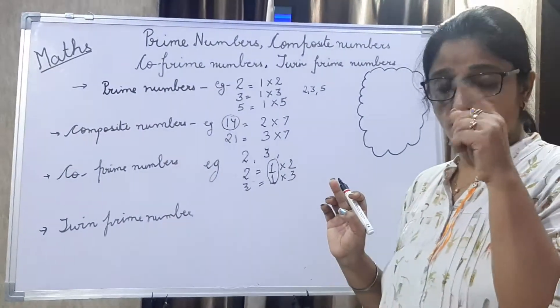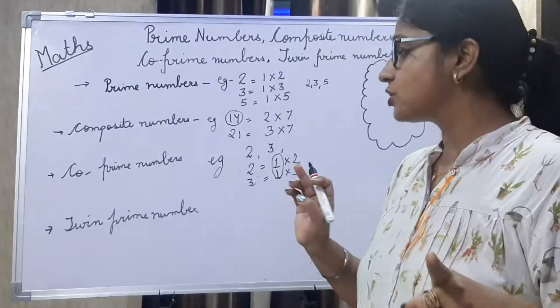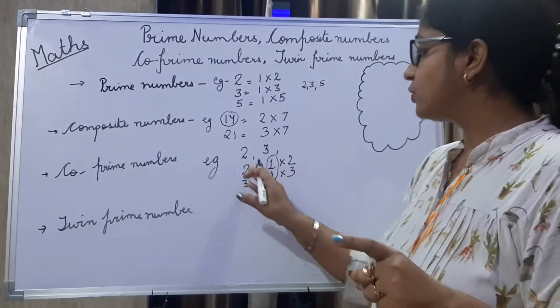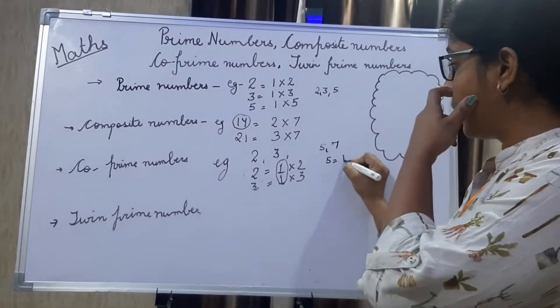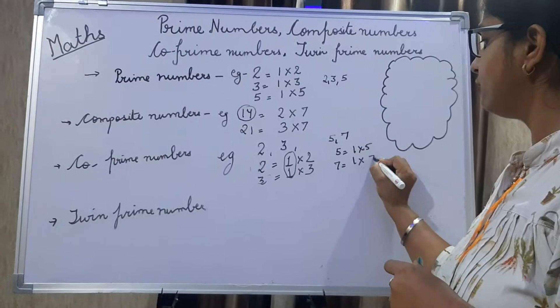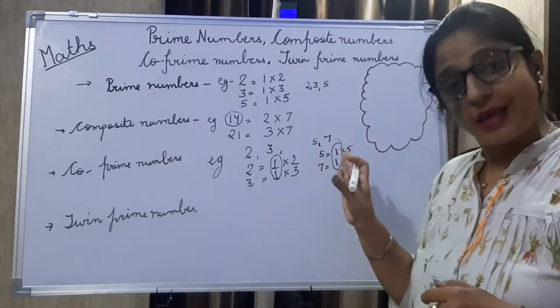There should be a factor. The common factor between the two prime numbers should be only one. So those are co-prime numbers. Like you can also see five and seven. Five has one and five, seven has one and seven. One is only the common factor. So this is called co-prime numbers.